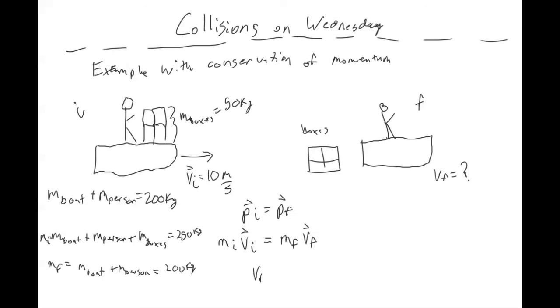So if we solve for the final velocity, we would divide the final mass to the other side. And so we would get that the final velocity would be 12.5 meters per second.